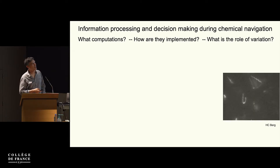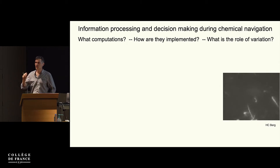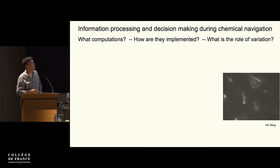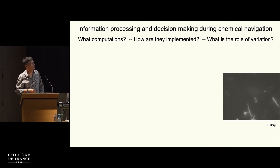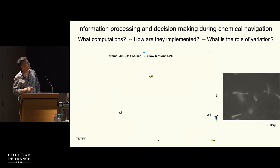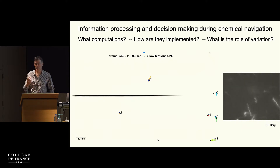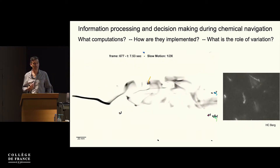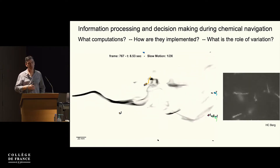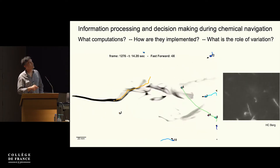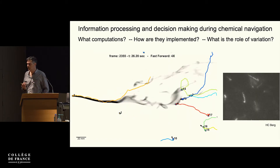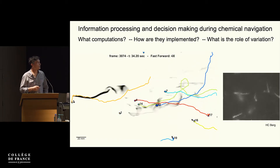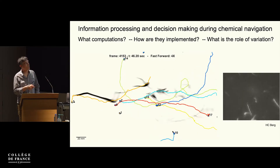I'm going to talk about bacteria that have flagella — E. coli — that move straight and then change direction, the so-called run and tumble. In my lab, we're also interested in studying fly olfactory navigation. The reason we study these systems is because we're interested in computation and how it is implemented by biological systems, from molecules all the way to behavior. One of the things we're very interested in is the role of fluctuation and variation in those computations. Today I'm going to focus on this role of variation.